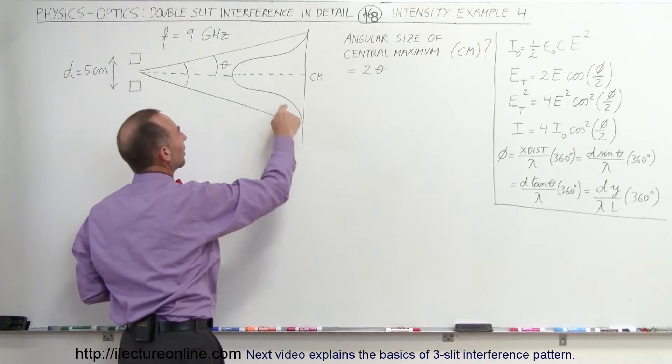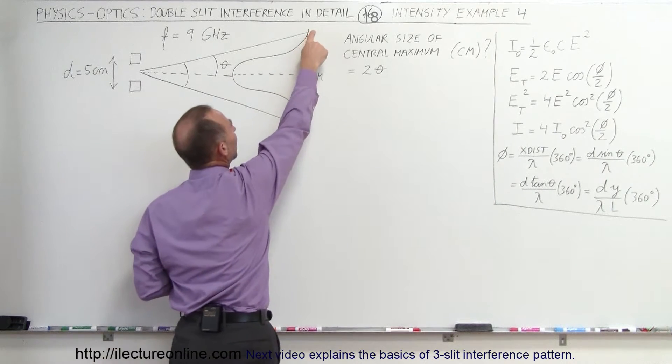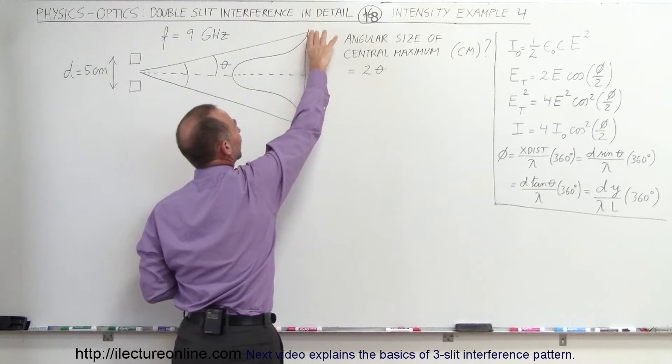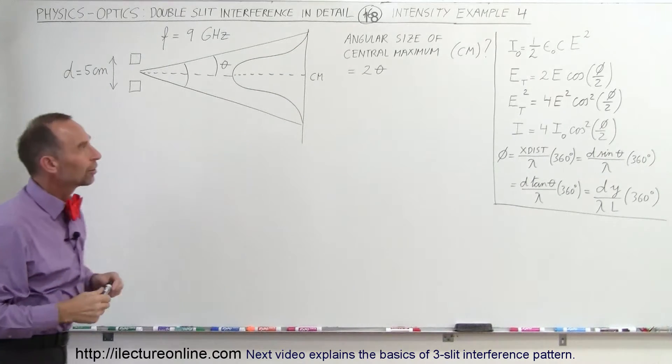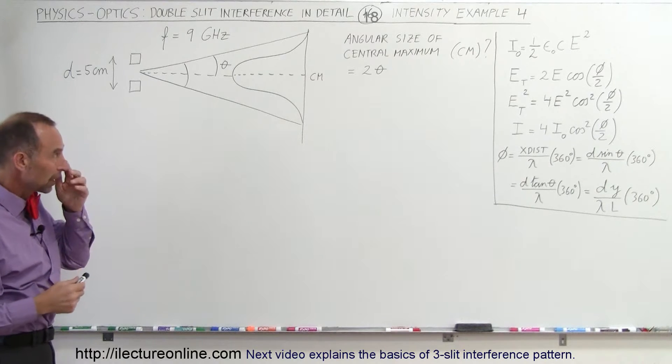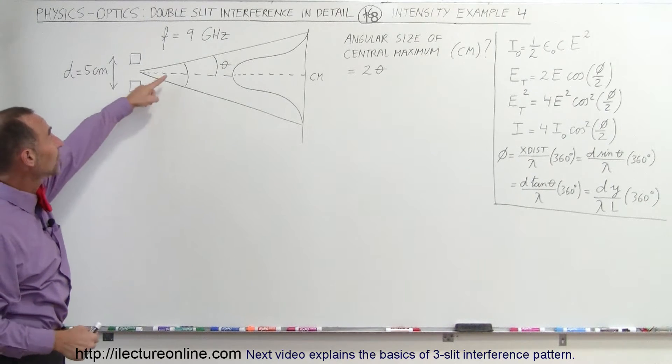We need to find out the angular distance to the minimum on one side. We take that distance, double it, and it gives us the total size of the angular of the central maximum. That would be equal to two times theta.